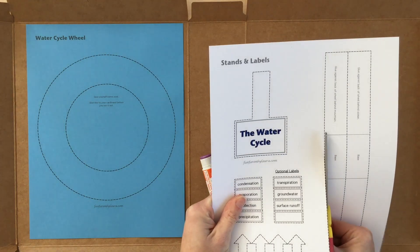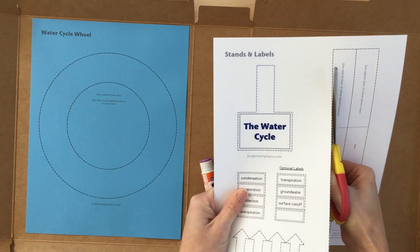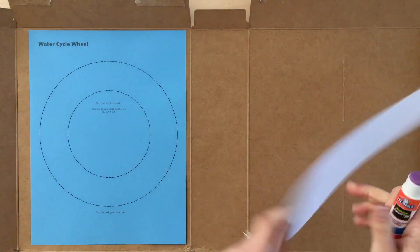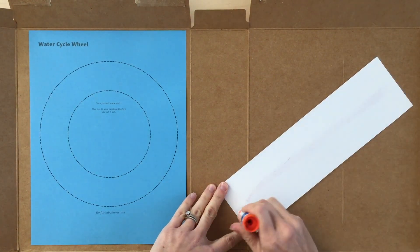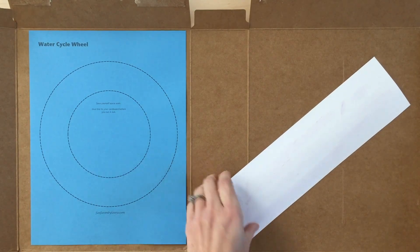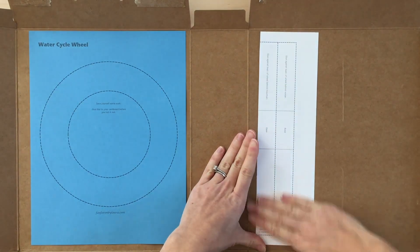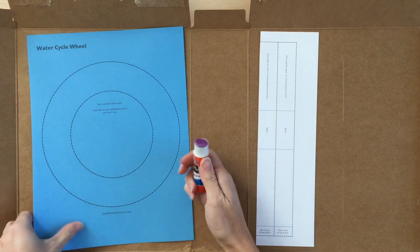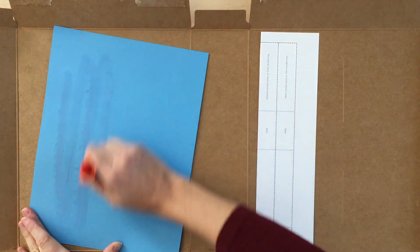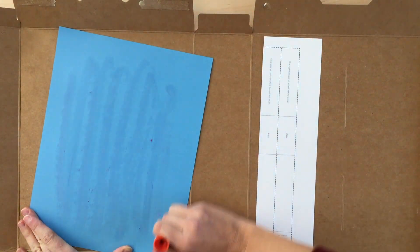The next step is to cut around the edge or even just part of the edge of your stands, and then you're going to glue the stands and your water cycle wheel to your cardboard. That way when you actually cut it all out, you won't have to cut it out twice. You glue it on the cardboard and then you just do it all at once.